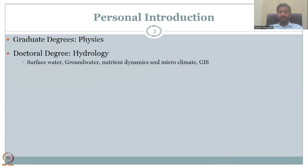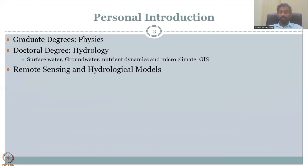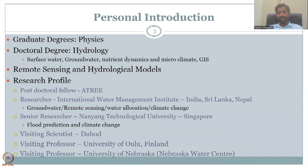I have a graduate degree in physics, and after my master's in physics, I joined the PhD program in hydrology, where I focused on surface water, groundwater movement, and hydrology. I also looked at nutrient dynamics and microclimate using GIS and remote sensing. Where there was less data for observation and less scenario-based models, I started learning remote sensing techniques and biological models. After my PhD, I moved as a research scholar with A3 Bangalore, followed by studies in Nepal with International Water Management Institute as a researcher in groundwater and remote sensing. Then I moved to Singapore as a senior researcher with Nanyang Technological University, where I did flood prediction and climate change models.